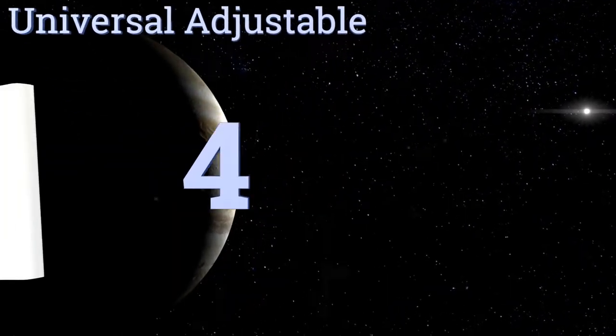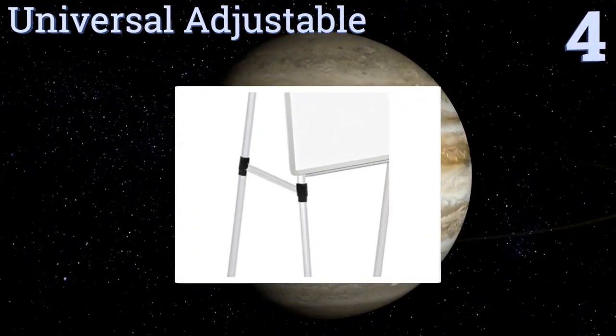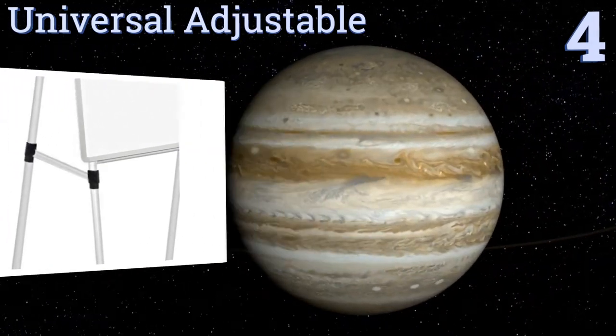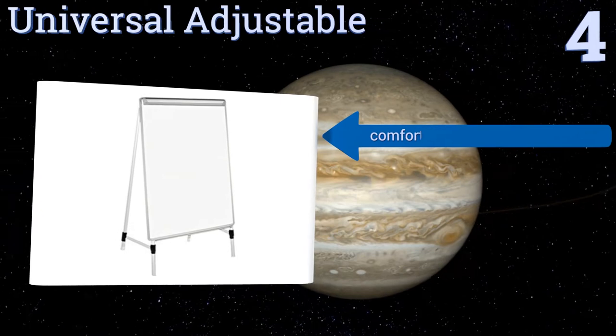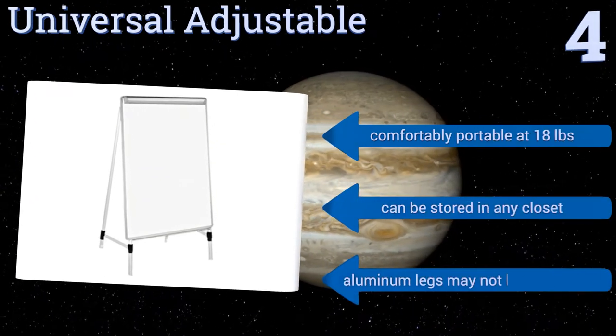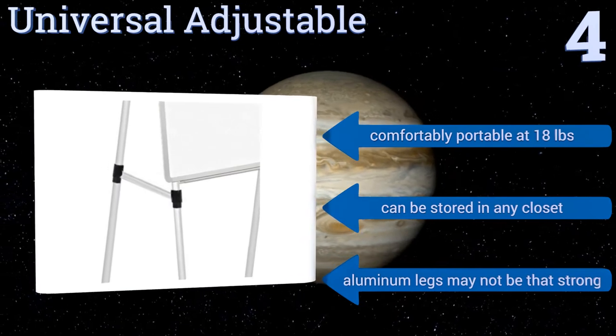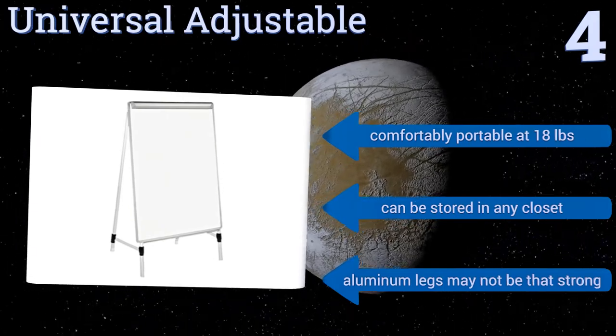At number four, if you own a business, the Universal Adjustable is great for sidewalk advertising and you can use it for posting notes to customers or staff indoors. This model's A-frame features adjustable legs and a marker ledge so others can add their own notes to the mix as well. It's comfortably portable at 18 pounds and can be stored in any closet. However, the aluminum legs may not be that strong.